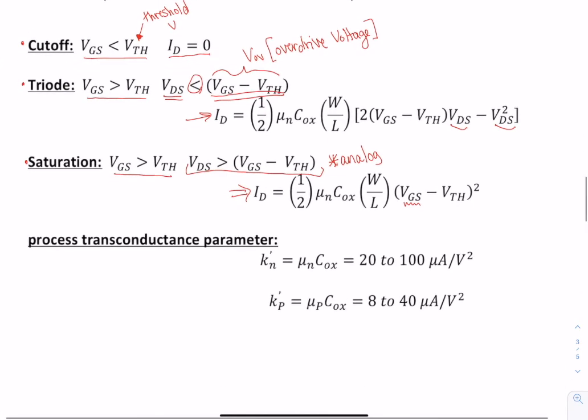A couple of the other terms in here, you have mu N COX. Mu N is the mobility of N. And then for P, these are all going to be P components. So that would be the mobility of a P. COX is the oxide, its capacitance of the oxide.